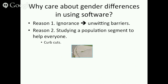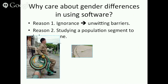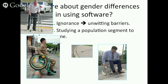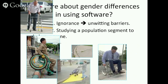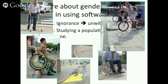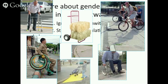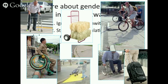Second, studying one population segment that becomes marginalized turns out to be a great way to find ways to help everyone. This is called transfer scenarios in the design community. A classic example is curb cuts — those little cut-out places in sidewalks. Way back when, there weren't any. People noticed people in wheelchairs and curb cuts were born. It did help people in wheelchairs, but it also helped people with walkers, people pushing strollers, bicycles, dollies, and suitcases. None of these benefits were anticipated, but by studying one population, they found features that helped everyone.